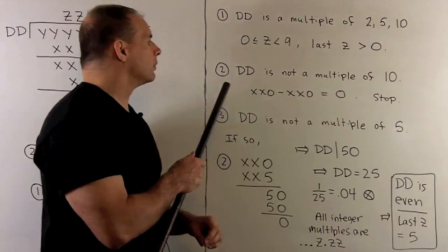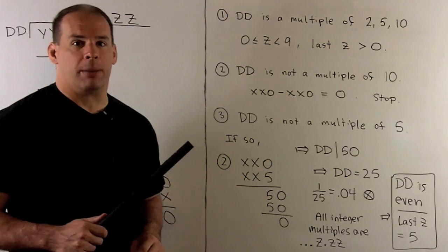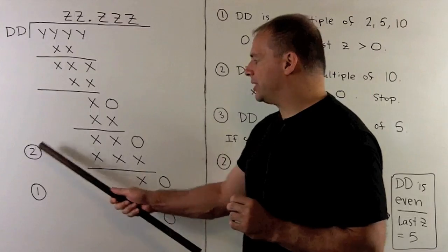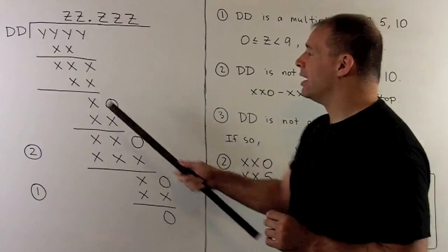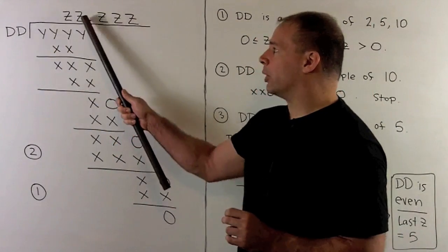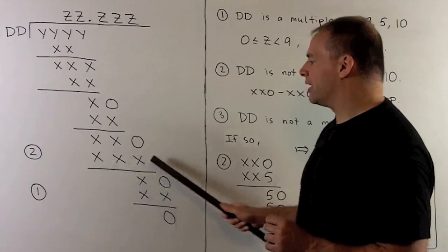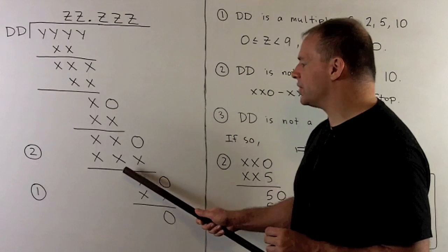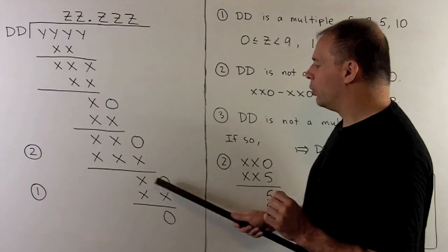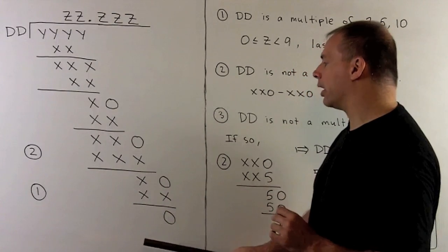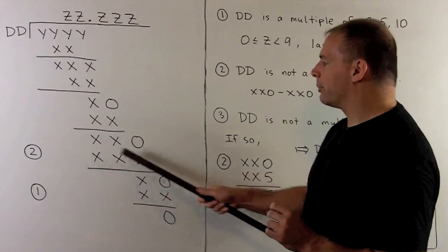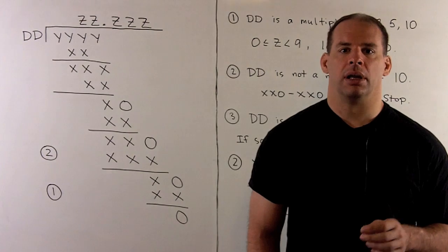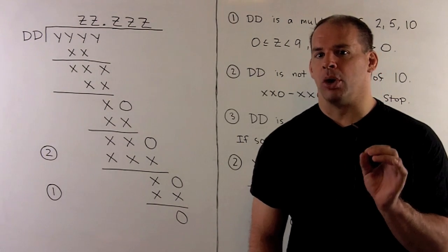Next, we show the divisor is not a multiple of 10. If it were, multiplying by any digit would give a multiple of 10, placing a zero in the second line. Taking that difference would cancel completely, meaning we wouldn't have a final step — but we do have a final step. So this number can't be a multiple of 10.